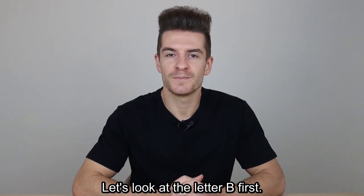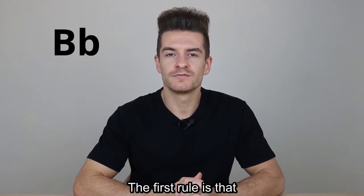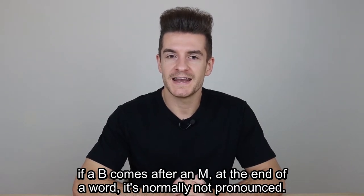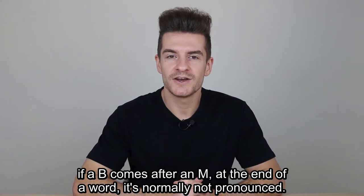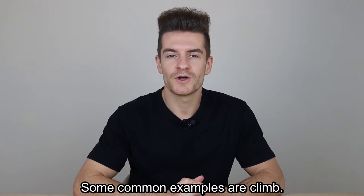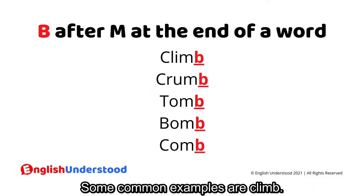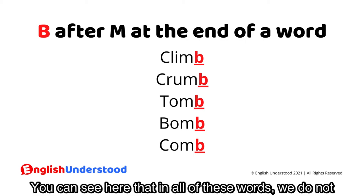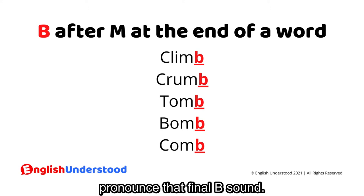Let's look at the letter B first. The first rule is that if a B comes after an M at the end of a word, it's normally not pronounced. Some common examples are: climb, crumb, tomb, bomb, comb. You can see that in all of these words, we do not pronounce that final B sound.